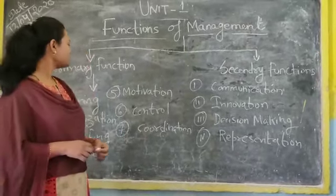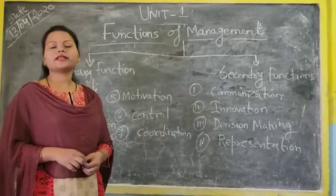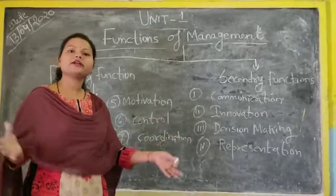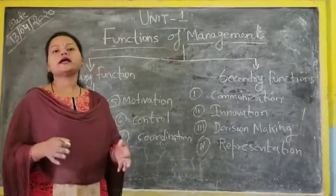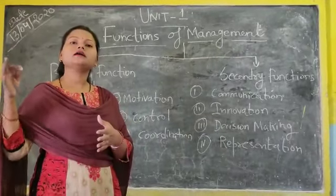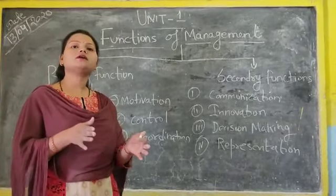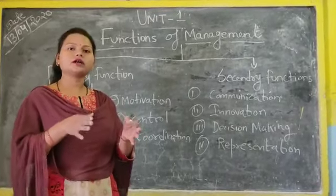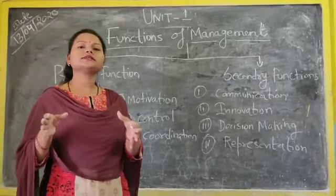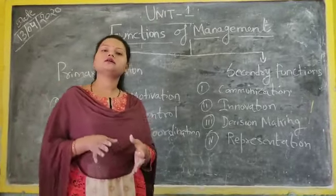Control is the sixth part of the functions of management. Control means to control the whole activity of the management and prevent it from going on the wrong track. Whenever the management or the workers go onto the wrong track, control is the process where you have to control the activity of your workers.